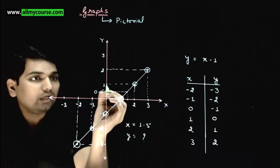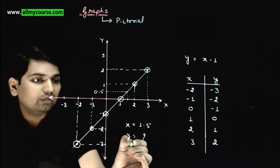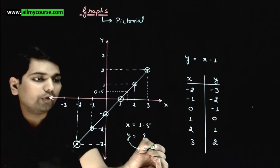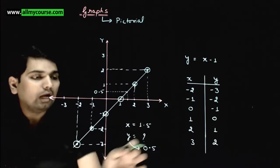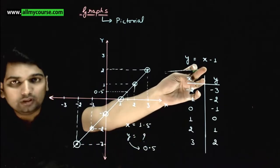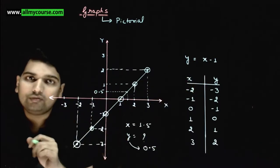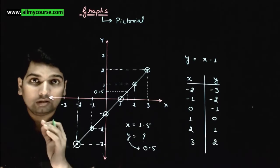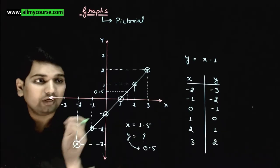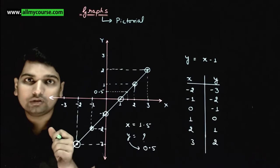So at x equals 1.5, what will be the y value? 0.5. You can substitute this in the equation and verify. If you substitute x equals 1.5, y equals 0.5 will come. This is how we draw a graph, and this is how we extract information from a graph.